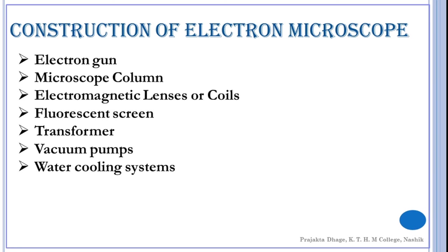Next one is microscope column. The microscope column consists of an evacuated metal tube. It is housed at the top of the electron gun. A number of electromagnetic lenses, viewing screen and photographic plate. These components are aligned one above the other. The microscope column provides shielding to the operator from x-rays that are generated when electron strikes the metal surface.